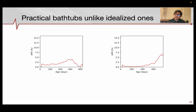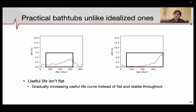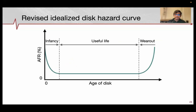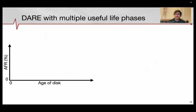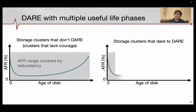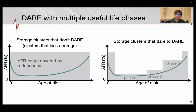We also observe that practical bathtub curves are very different from idealized ones. Their useful life isn't flat — instead we see a tilted bathtub where the AFR curve slowly grows over time. For disk adaptive redundancy, this means Pacemaker enables multiple transitions during a disk's useful life, each called a phase of useful life.